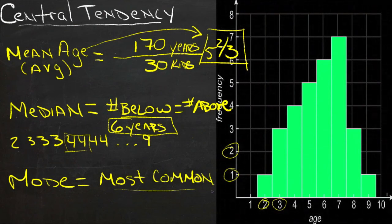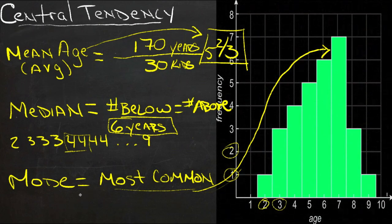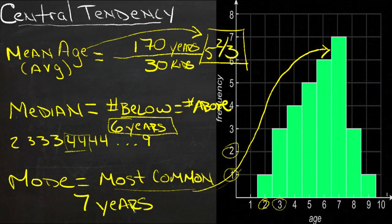we can see the most common number is going to be the one that has the highest graph, so it's going to be this right here, and that age is 7 years old. So our mode is 7 or 7 years. The most common age for a kid to be coming to the table is 7 years old.